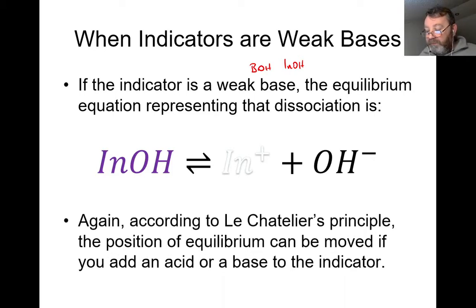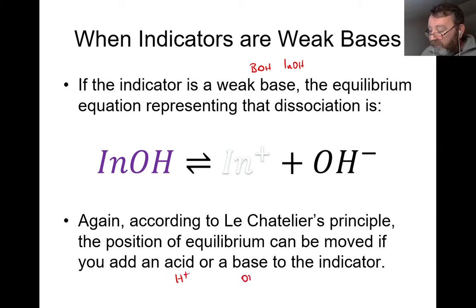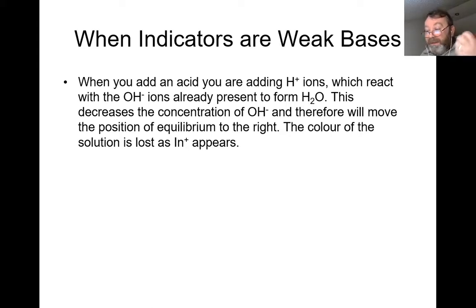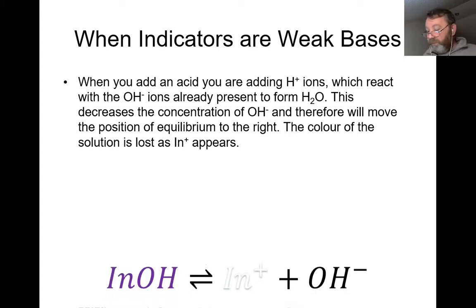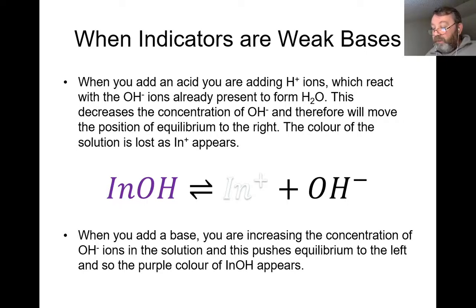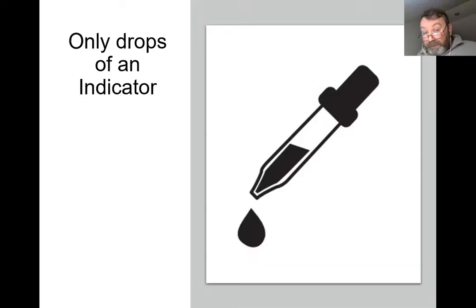According to Le Chatelier's principle, the position of equilibrium can be moved by adding an acid — increasing H+ — or a base — increasing OH-. When you add an acid you increase H+, which reacts with OH- and removes it from solution; this decreases the concentration of OH- and moves the equilibrium to the right, and the color of the solution is lost, becoming colorless. When you add a base you increase OH-, so equilibrium moves to the left and the purple color begins to appear once more.